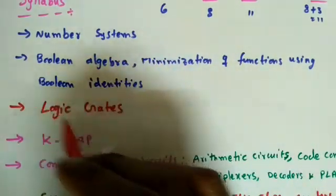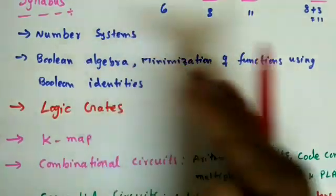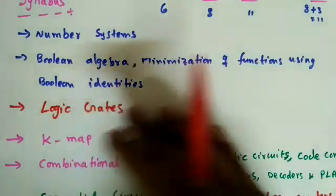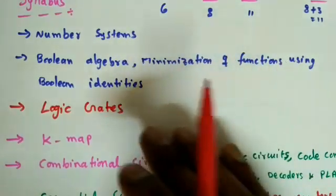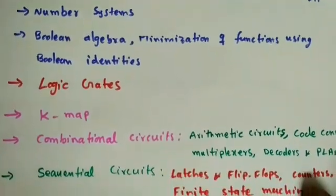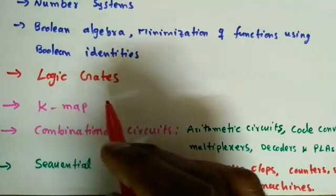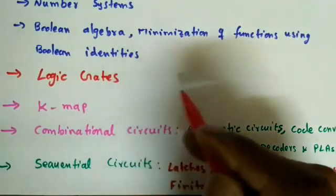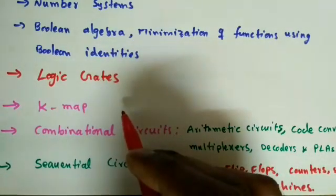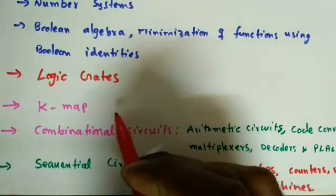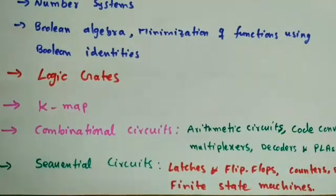Then comes logic gates — the different types of logic gates and how many are required to perform an operation. After that, we cover Karnaugh maps, which are used to minimize three- or four-variable logical functions. We'll see how to express functions in Sum of Products (SOP) and Product of Sums (POS) standard forms.